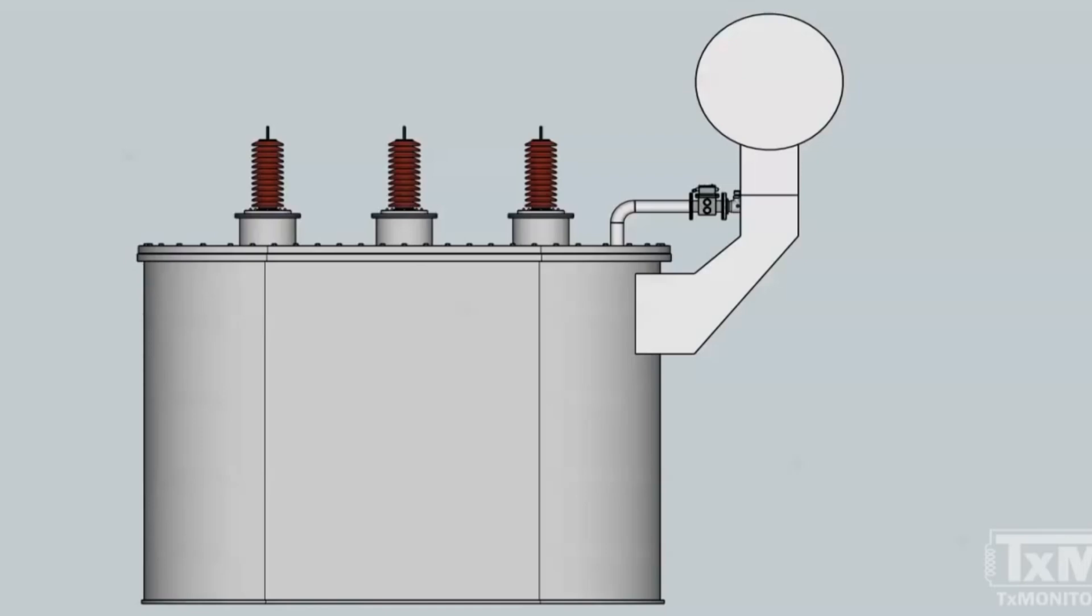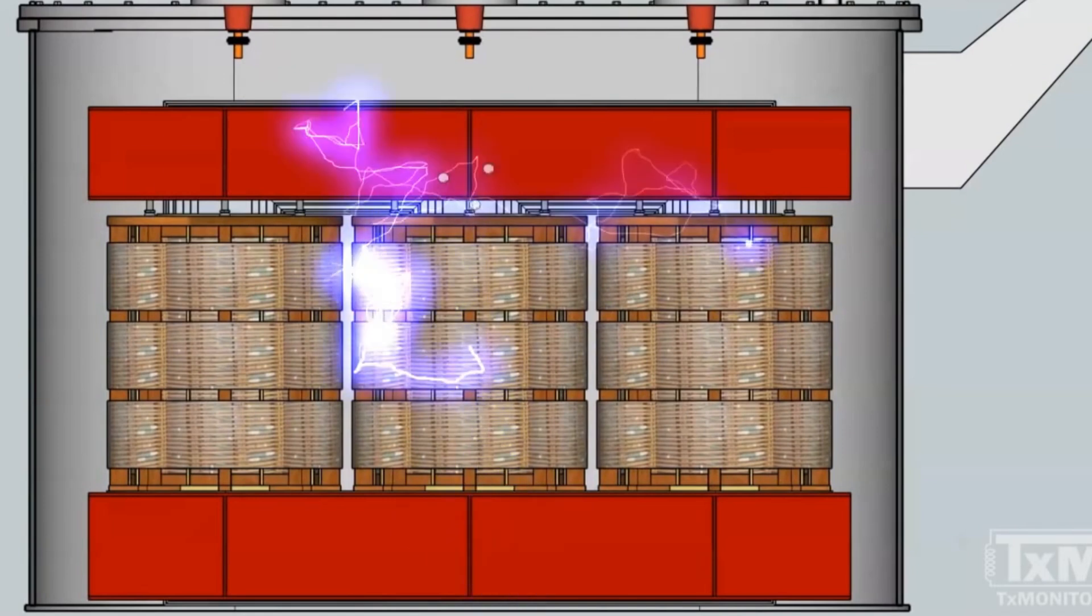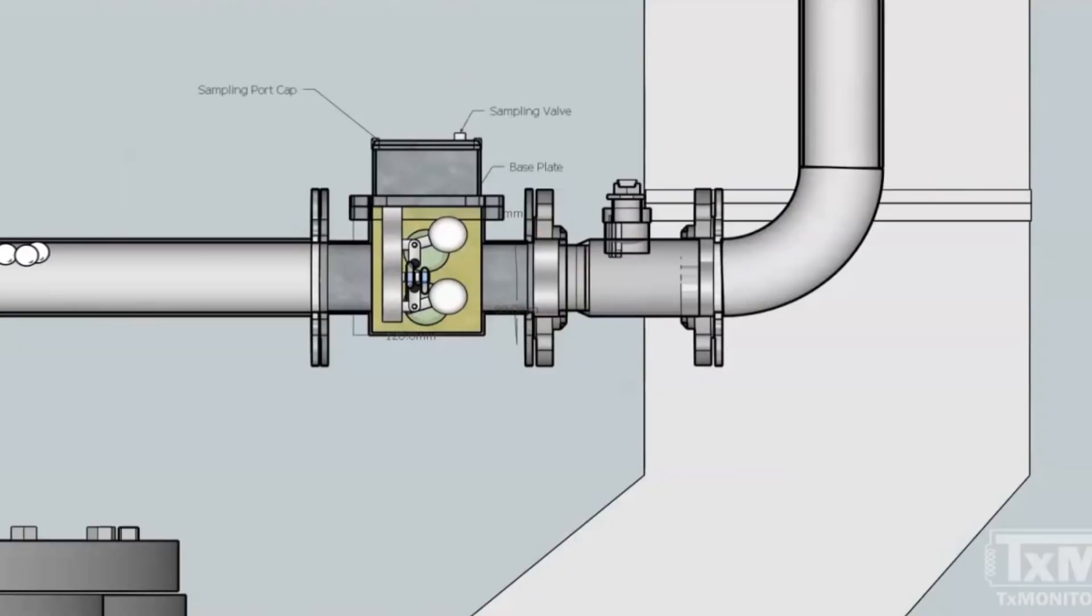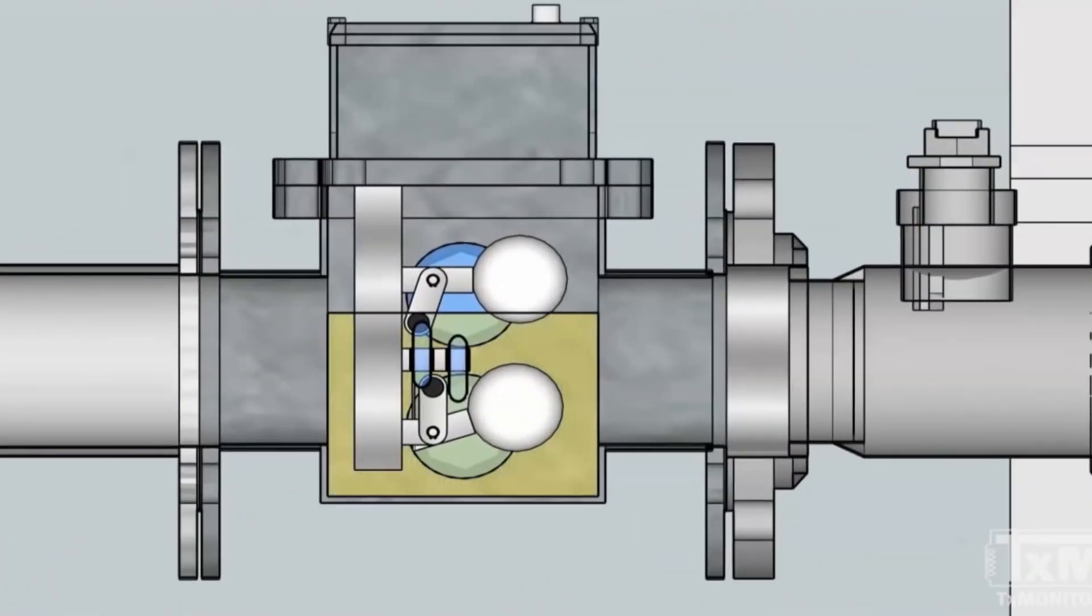When, for some reason, gases are not dissolved in the insulating liquid, they evolve in the form of bubbles. These bubbles tend to rise inside the unit and find their way to the conservator through the pipe, connecting the main transformer and the conservator tanks.